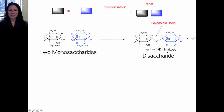This is called the glycosidic bond. The glycosidic bond links two sugar monomers together between the anomeric carbon of one of the monomers and the oxygen of one of the alcohol groups of the other sugar. The important part is that it connects from the anomeric carbon of one sugar to the oxygen of another sugar.